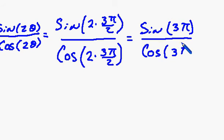The sine of 3π is 0, and the cosine of 3π is negative 1. Of course, the final answer is 0.